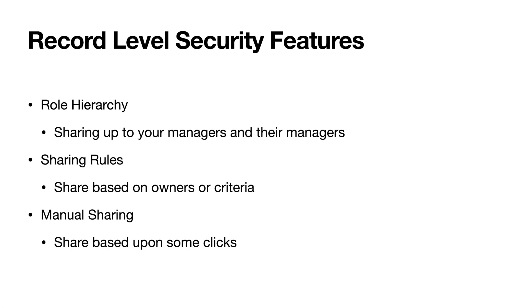That's an overview of record level security. It works in harmony with object level security — if you don't have access to leads or opportunities, you won't be able to see any of those records regardless of your record level security settings. Just like in the library example: you can't look at books in a section if you don't have access to that section.